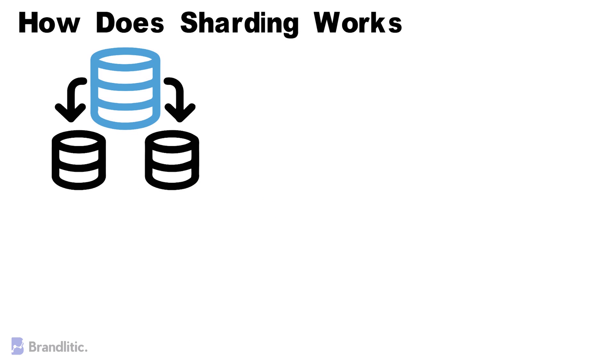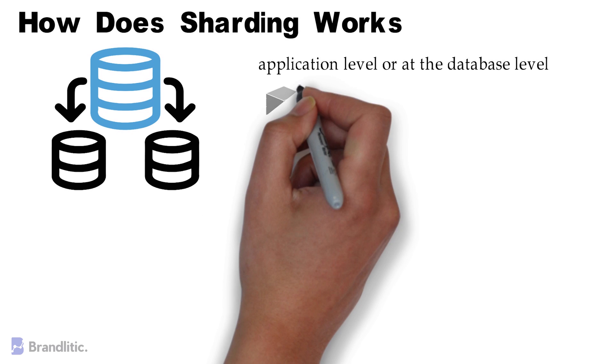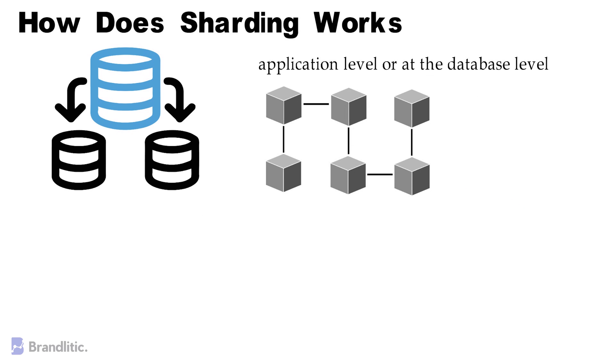Sharding involves splitting a large database of the same type into multiple databases. Because this makes for an algorithm that can be more easily generalized, it's possible to implement sharding at either the application level or at the database level. We all know that blockchain consists of nodes. Here, each node is a significant part of the ecosystem that shares its computational resources to add blocks to the blockchain. For example,